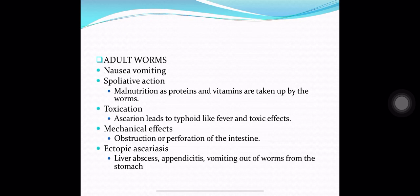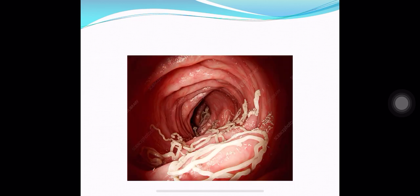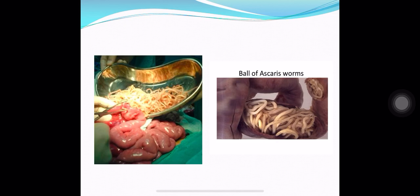Adult worms can cause nausea and vomiting in the intestine. They produce spoliative, toxic, and mechanical effects. Spoliative action leads to malnutrition as proteins and vitamins are taken up by the worms. The toxic body fluid of the worm, Ascarion, can lead to typhoid-like fever and toxic effects. Mechanical effects include obstruction or perforation of the intestine. Ectopic ascariasis can also occur, causing liver abscess, appendicitis, or vomiting of worms. Photographs show Ascaris Lumbricoids worms in the intestinal lumen and a ball of roundworms found in the intestine of an operated patient.